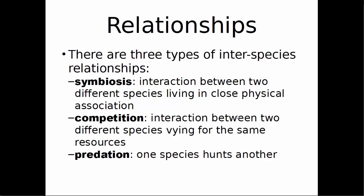Within communities, we have relationships between different organisms. There are three different types of interspecies relationships we're going to cover today. One is symbiosis, the interaction between two different species living in close physical association. Another is competition, the interaction between two different species vying for the same resources. And predation is when one species hunts another.